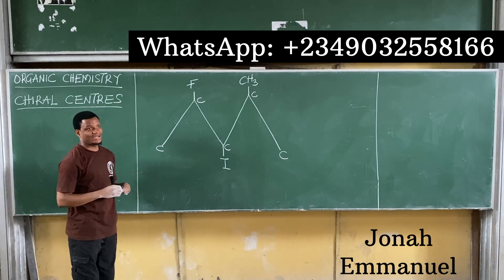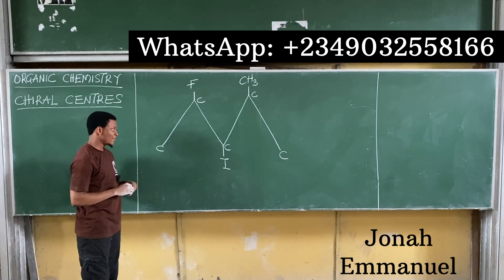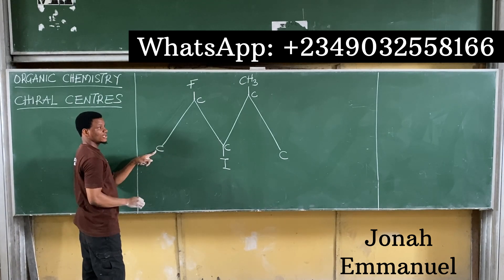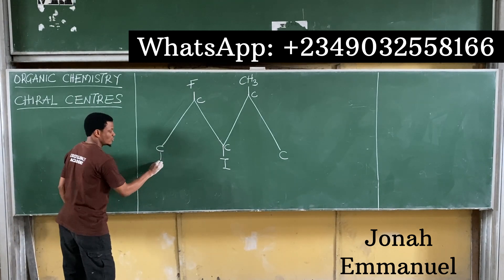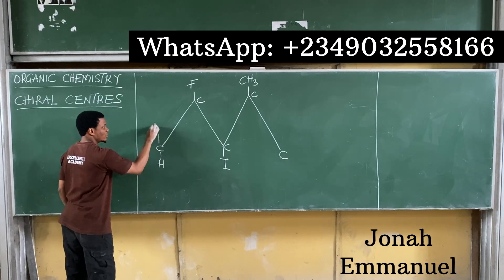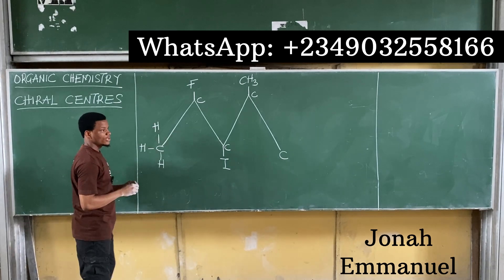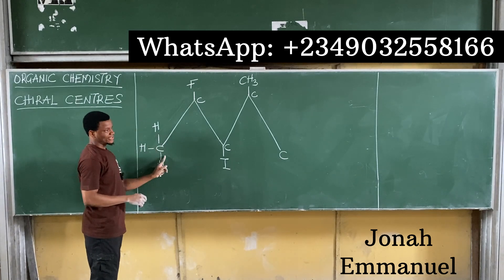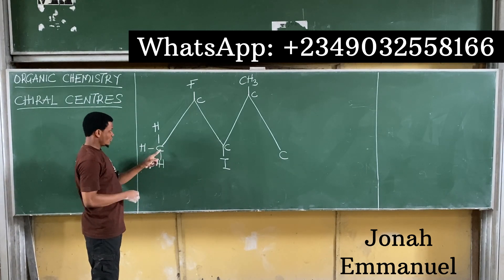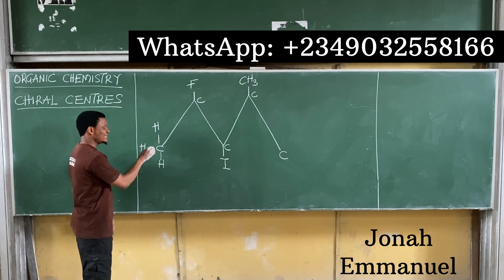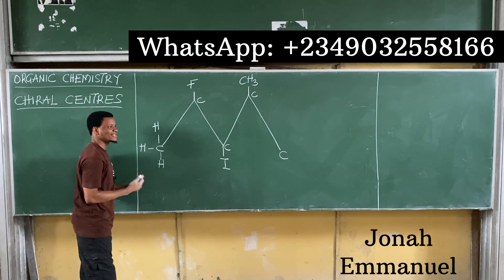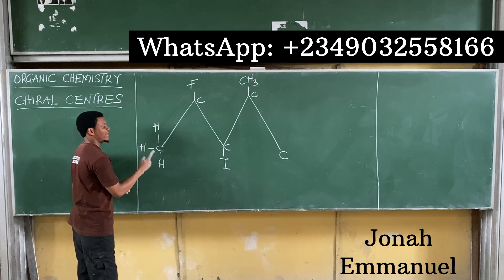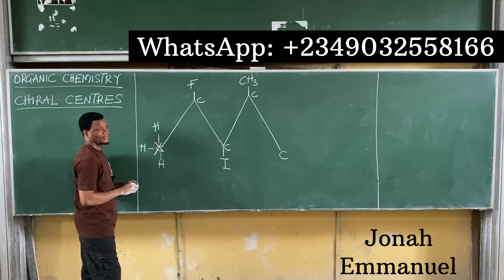Let's pick out which of them is a chiral center. This carbon here has one bond and when completed it becomes one, two, three, and four bonds. For all carbon atoms to be stable, they must have four bonds. This carbon possesses the same group — hydrogen, hydrogen, hydrogen — hence this one cannot be a chiral center.